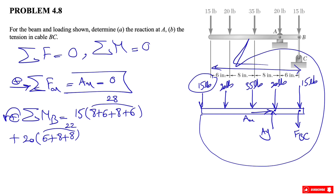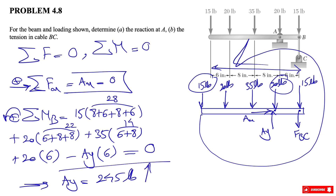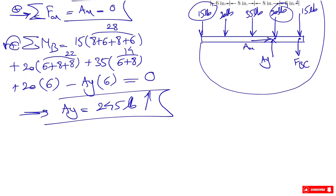Continuing the moment equation about B: the 35-pound force gives a positive moment, with distance 6 + 8 = 14. The other 20-pound force has a distance of simply 6. For Ay, it makes a clockwise moment so it gets a negative sign, with a distance of 6. Setting the sum equal to zero, the only unknown is Ay, which gives us Ay = 245 pounds. The positive result confirms the assumed direction for Ay was correct.